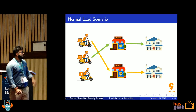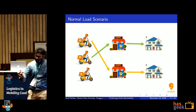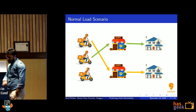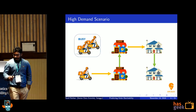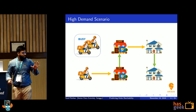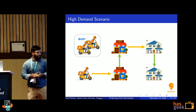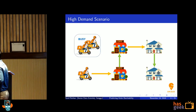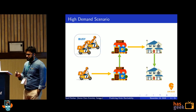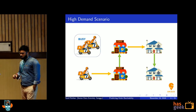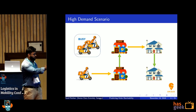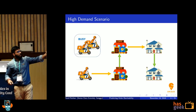In a normal load scenario, the number of delivery executives is comparable to the number of orders, so a delivery executive can pick up a single order and deliver it. But at high load, executives are busy delivering. Using the pigeonhole principle — if you have M buckets and N items and the number of items is greater than the number of buckets, some buckets will have more than one item. Same here: we have fewer delivery executives than orders, so some executives have to deliver more than one order in a single trip — and that is batching.